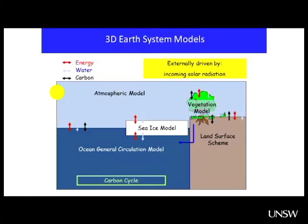We can also use coupled Earth system models. If we have all this information, we can force a model with changes in incoming solar radiation, changes in CO2 if we know it, or changes in ice sheets, and let the model run to study the dynamics, the teleconnections, and so on. Paleoclimate modeling is very important and can help us understand a lot about past climates.